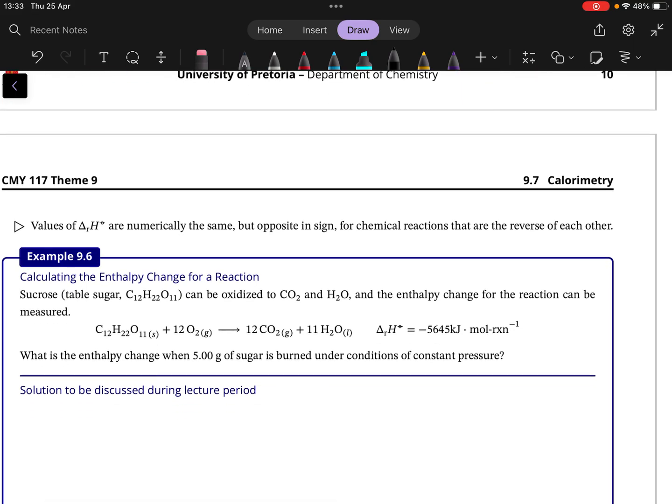An important note: values of reaction enthalpy are numerically the same but opposite in sign for reactions that are the reverse of each other. For example, if A → B has delta rH° = 12, then B → A has delta rH° = -12.